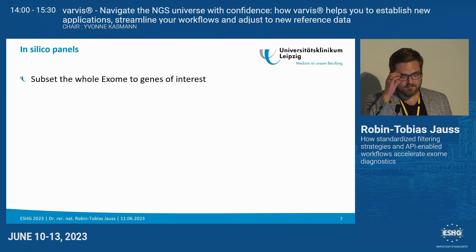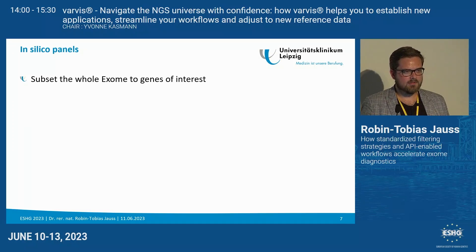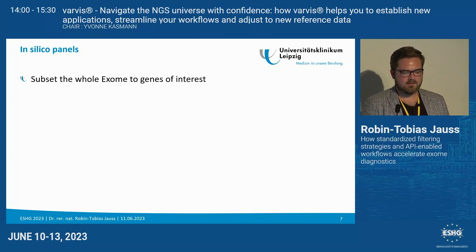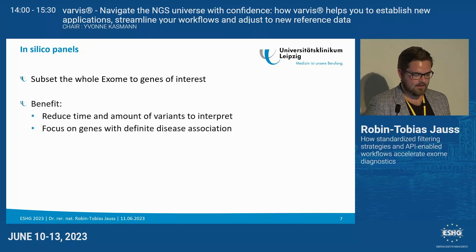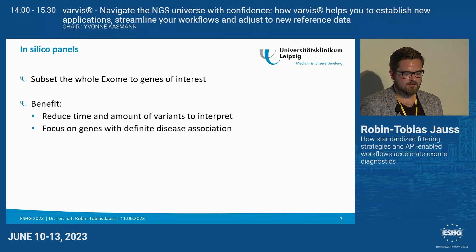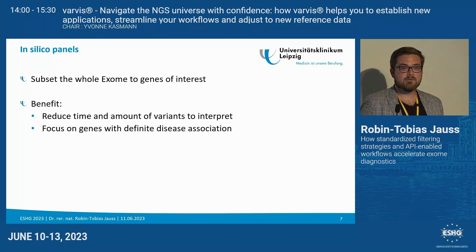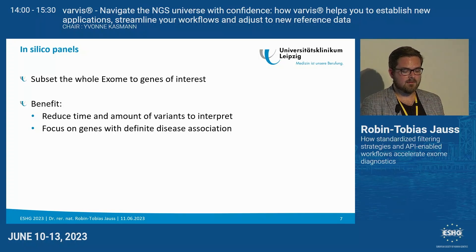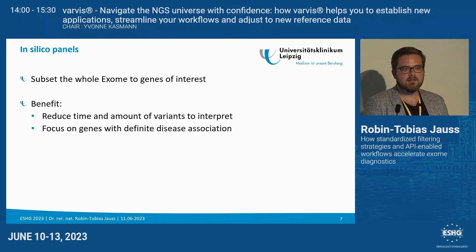Starting with in silico panels: these are not physical panels, but what we do with our whole exome data is subset all the genes from the exome to a more specific set of genes of interest. The benefit is that we reduce the time and amount of variants to interpret because we reduce the number of genes we are analyzing. We can also focus on genes with a very definite disease association and do not have to spend time evaluating gene relevance.